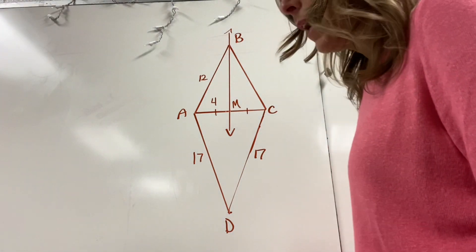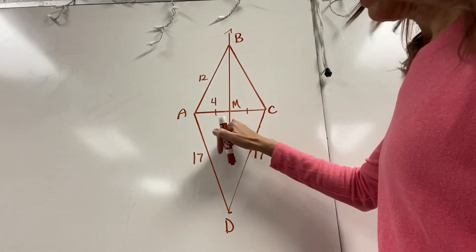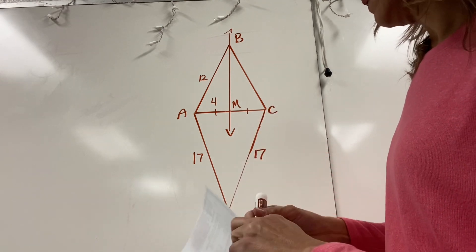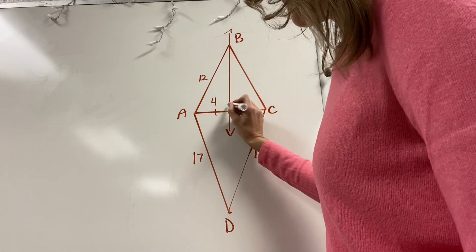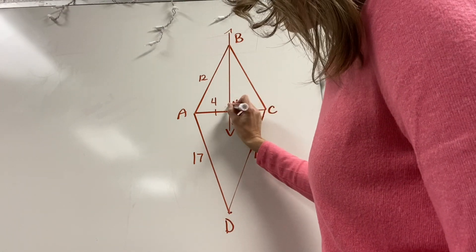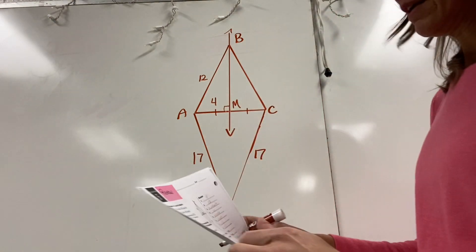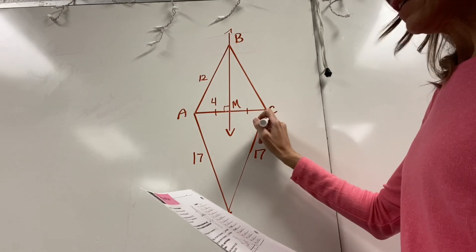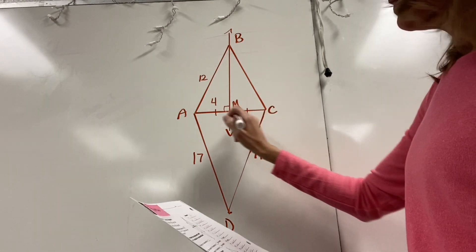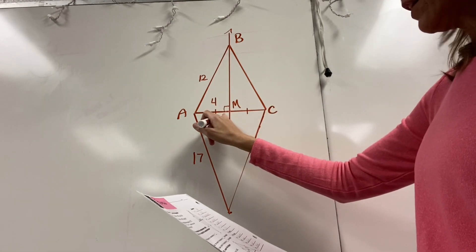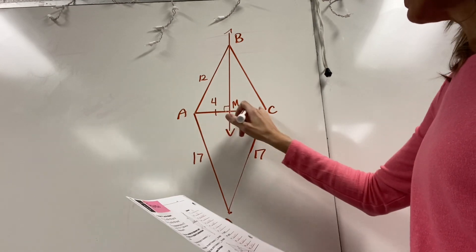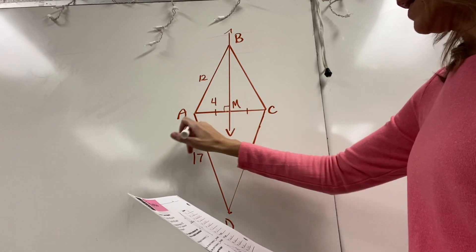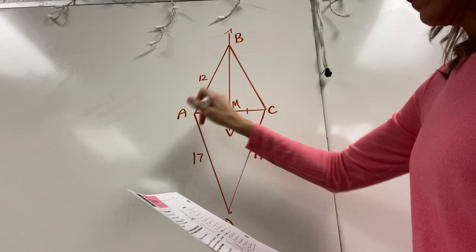It says that line BM right here is perpendicular to segment AC. I forgot to indicate my right angle, so I'm going to draw that little square there to indicate my right angle. So it's perpendicular — we know that BM is perpendicular to AC. Also, segment AM is congruent to segment CM, so I've marked that as well. They also tell us that AM is four.